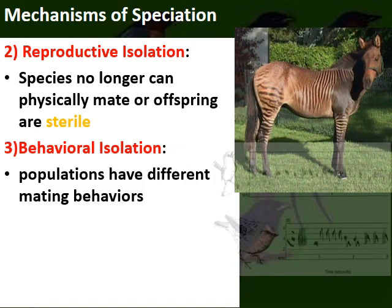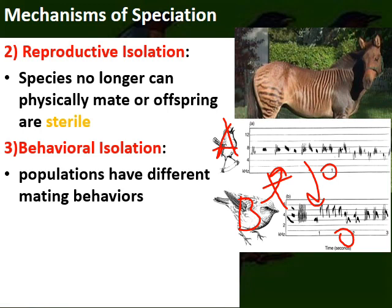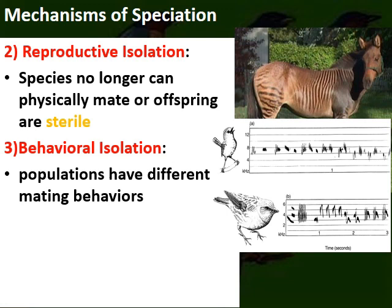Third, behavioral isolation — very common among birds and insects — occurs when populations behave differently during mating. For example, similar bird populations using different mating songs: population A's song doesn't signal the right cues for population B, and vice versa, so they never mate with each other. Some behavioral trait prevents reproduction between them.